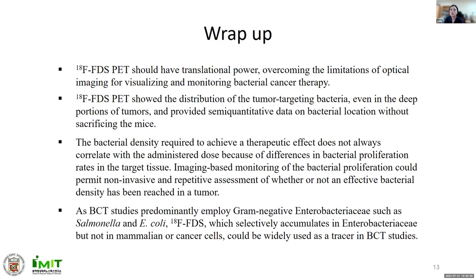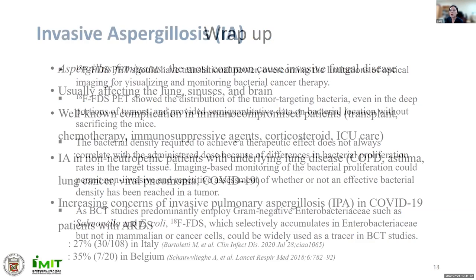To wrap up the first part: FDS PET should have translational power overcoming the limitation of optical imaging for visualizing and monitoring bacterial cancer therapy. FDS PET showed the distribution of tumor-targeting bacteria even in the deep portion of tumors and provided semi-quantitative data on bacterial location without sacrificing the mice. The bacterial density required to achieve a therapeutic effect does not always correlate with the administered dose because of differences in bacterial proliferation rates in the target tissue. Imaging-based monitoring of bacterial proliferation could permit non-invasive and repetitive assessment of whether an effective bacterial density has been reached in a tumor. As BCT studies predominantly employ gram-negative Enterobacteriaceae such as Salmonella and E. coli, FDS — which selectively accumulates in Enterobacteriaceae but not in mammalian or cancer cells — could be widely used as a tracer in BCT studies.